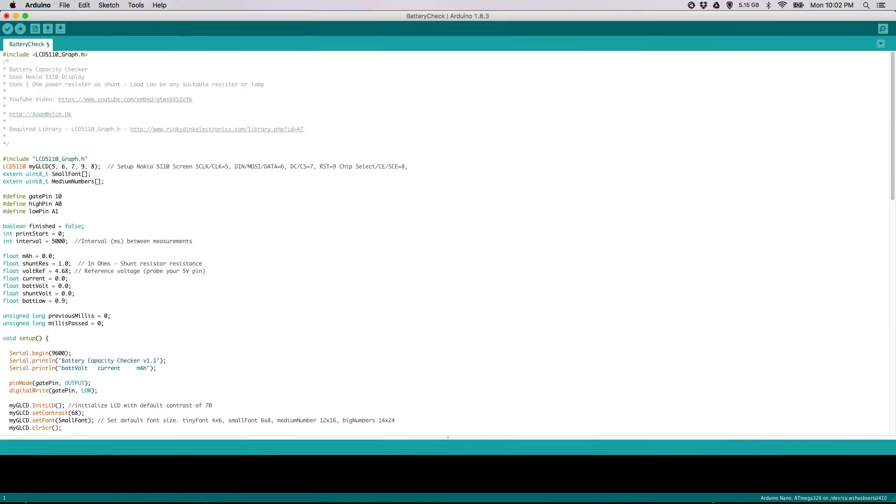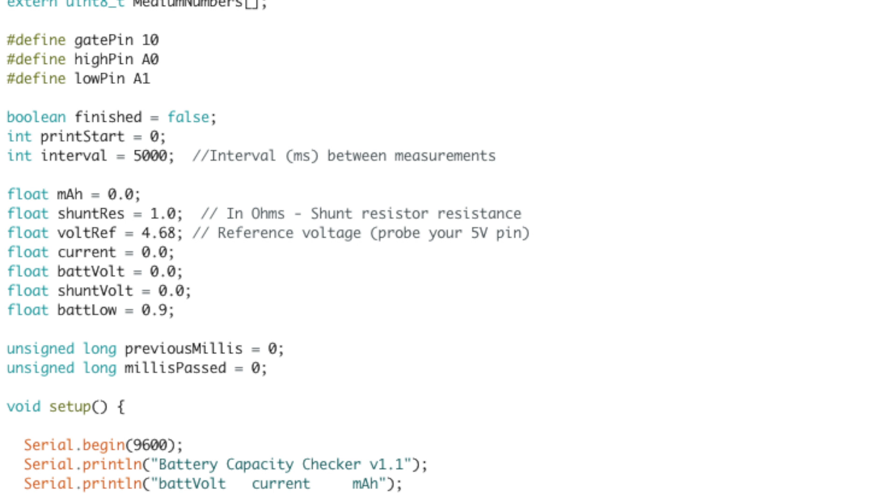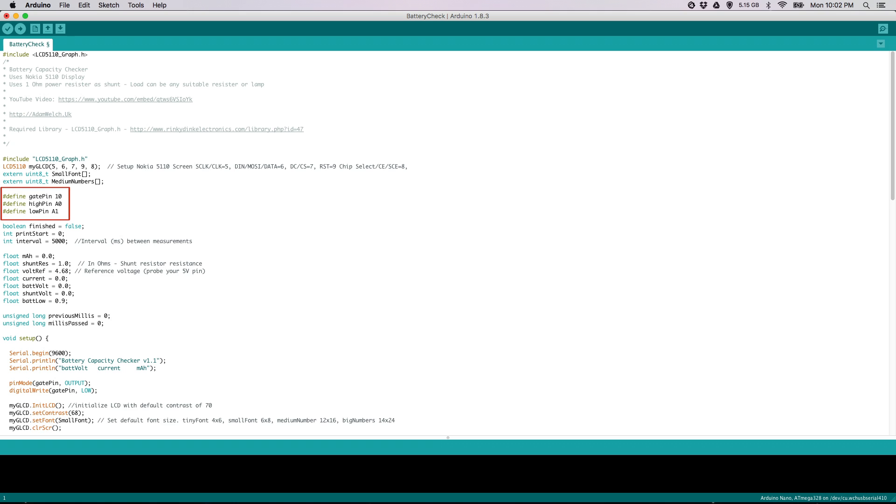Now let's take a look at the sketch code. Adam's Arduino sketch is fairly simple. Basically, we're just going to invoke the library that drives the LCD, define a few variables, and perform Ohm's law calculations until the battery drains out. Here you can see where we've defined our pins: analog low and high for the shunt and the digital signal pin for the MOSFET. This section defines all our variables for the calculations later.